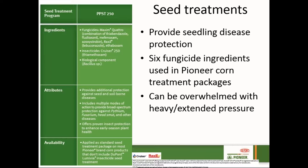Luckily, we have seed treatments at our disposal with many different fungicides to help us prevent seedling diseases. Without these fungicidal seed treatments, disease pressure would likely be a lot worse and something we'd experience much more frequently. Within the Pioneer lineup, we have several seed treatment packages, but for the most part we have six different fungicide active ingredients used within corn, and those six ingredients really do help prevent seedling diseases.